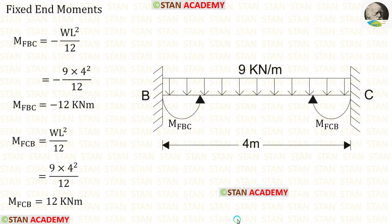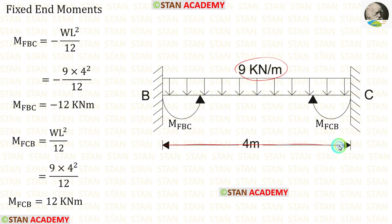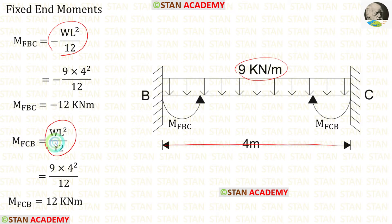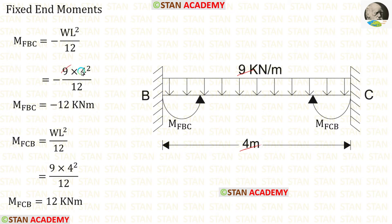Now let us find the fixed end moments in the beam BC. In the beam BC, there is UDL of 9 kilonewton per meter acting for the full span. The formulas for the fixed end moments are minus WL squared upon 12 and positive WL squared upon 12. Here W is 9 and L is 4. When we apply the values, we get M of BC and M of CB.